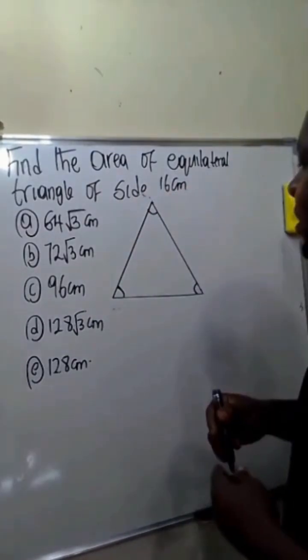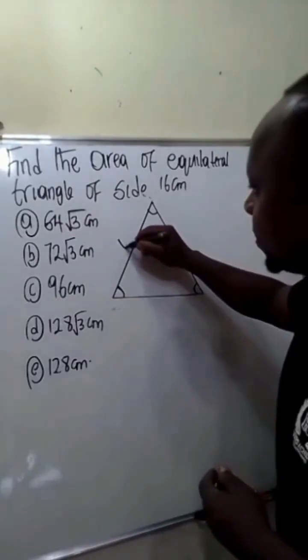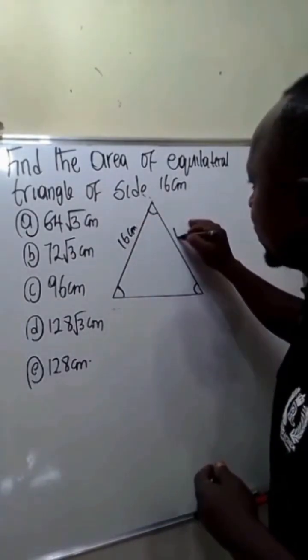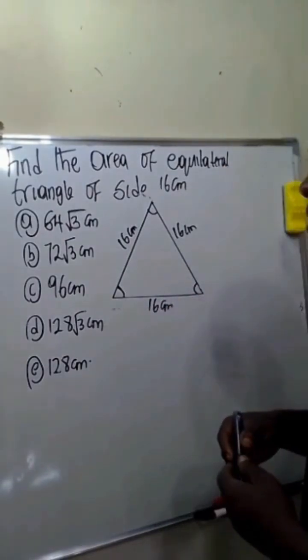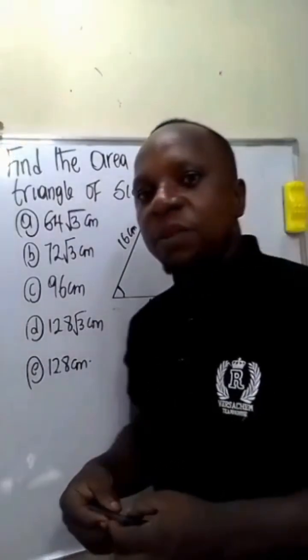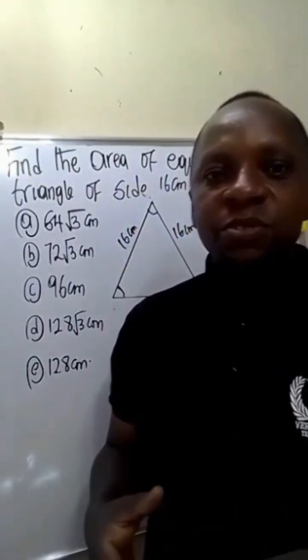Now from the question we are told that the side is 16 cm. This means this side is 16, this side is 16 cm, this side will also be 16 cm. Now the sum of angles in a triangle is 180 degrees.